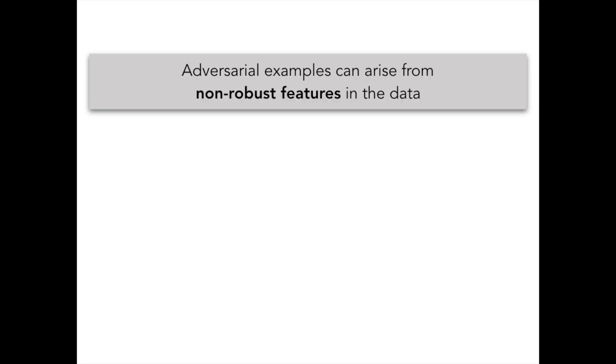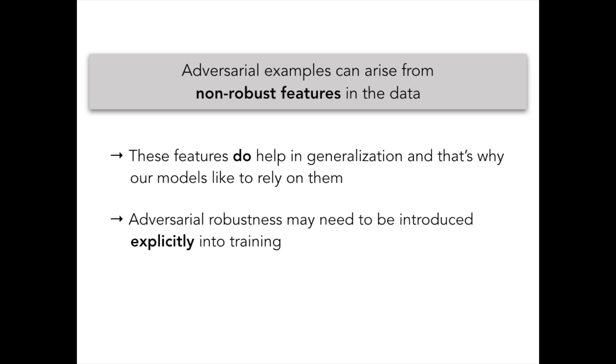In general, our findings suggest that adversarial examples can arise from non-robust features in the data that actually help generalization but hurt robustness. Note that because these features help generalization, simply learning better models may not be sufficient for fixing the problem of adversarial examples.